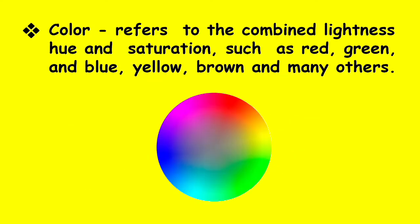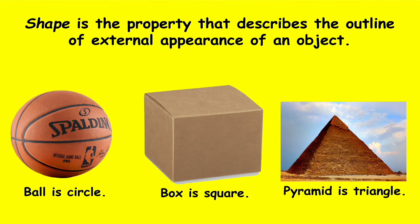Color refers to combined lightness or darkness, hue, and saturation such as red, green and blue, yellow, brown, and many others. Shape is the property that describes the outline or external appearance of an object. Examples are: a ball is a circle, a box is a square, and a pyramid is a triangle.